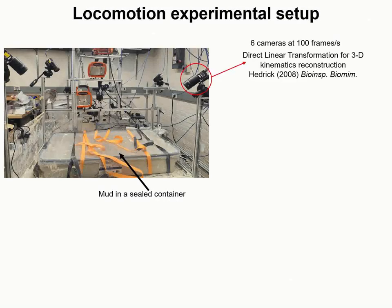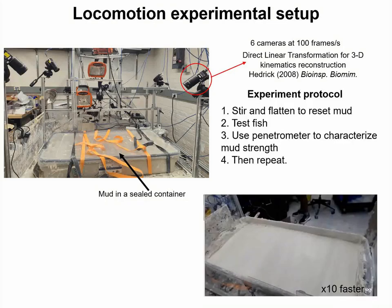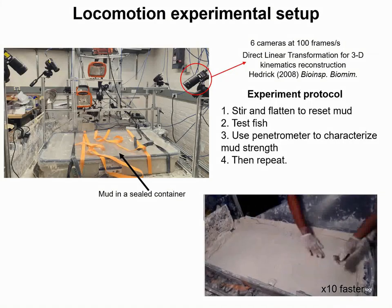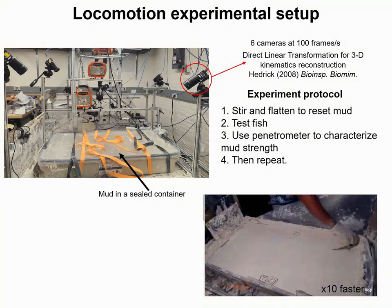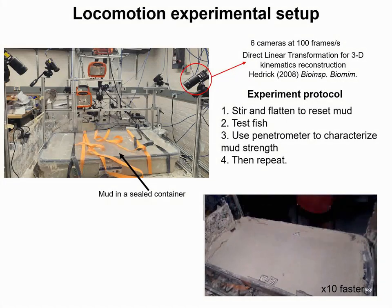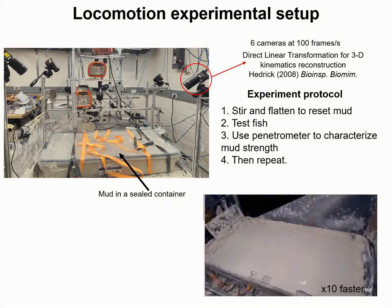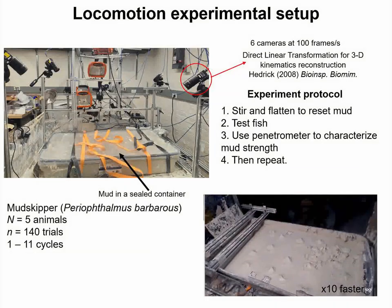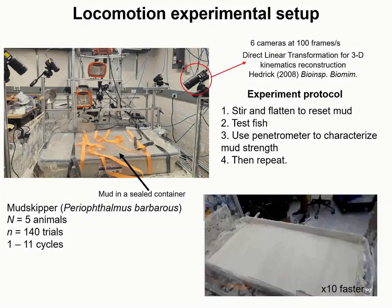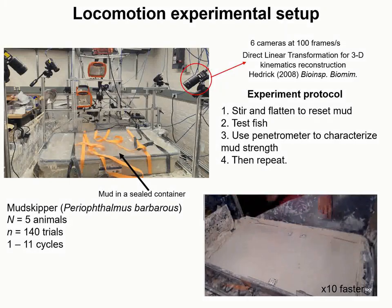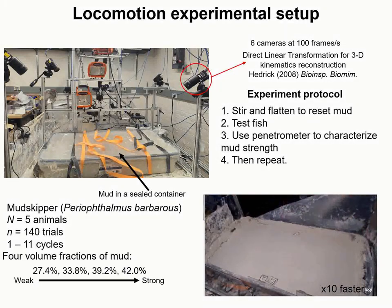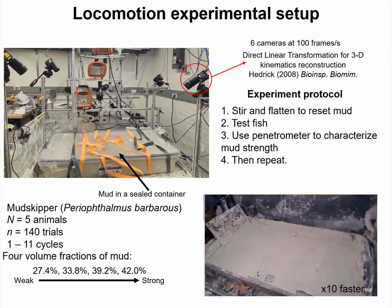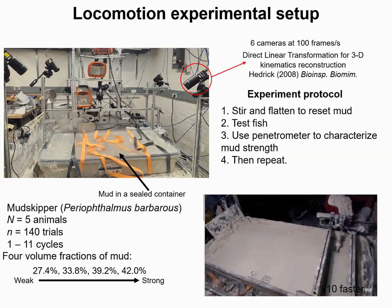We placed cameras around the entire mud test bed to track the animals during the study. We then developed an experimental protocol where we first prepared and flattened the mud, performed the animal study, used the penetrometer to characterize mud strength, and then repeated the process. We used five animals in total with 140 trials of 1 to 11 cycles each, conducted across four different volume fractions varying from weak to strong mud.